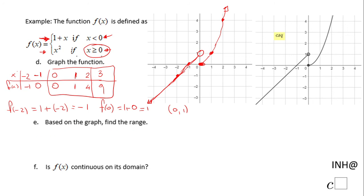On part e, based on the graph we find the range — what values we can get out. Looking at the left side of the graph and the right side where x is greater than or equal to 0, it looks like we can get any value out. So the range is all real numbers.